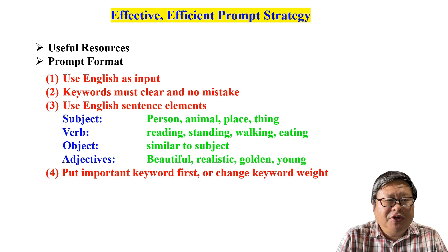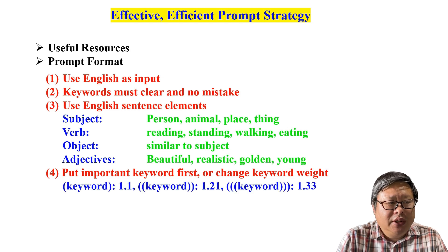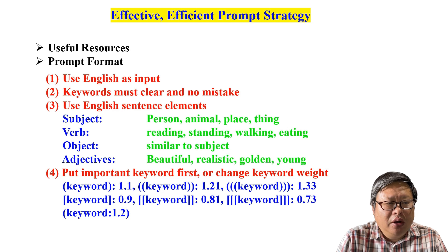Fourth, Stable Diffusion will treat your prompt according to the sequence, so put the important keyword first. Also, the keywords can be modified with a weight value. For example, parentheses will increase the weight to 1.1 times. Double parentheses will increase it to 1.21. Brackets will decrease the weight value to 0.9. Or you can directly write the weight value in parentheses — for example, (word:1.2) means to increase the weight to 1.2.